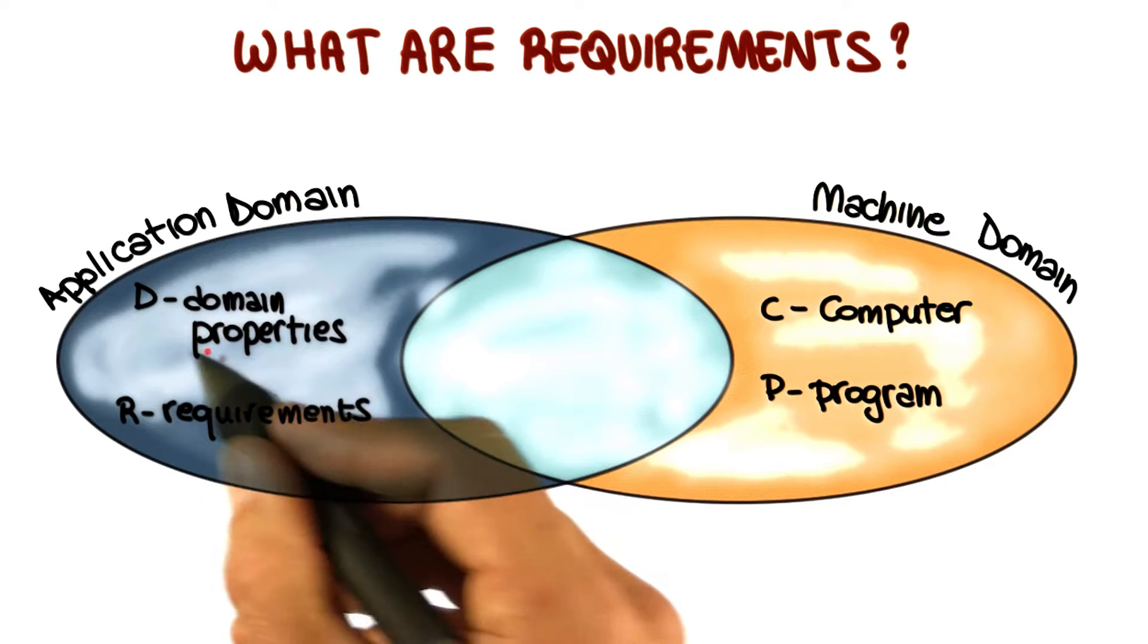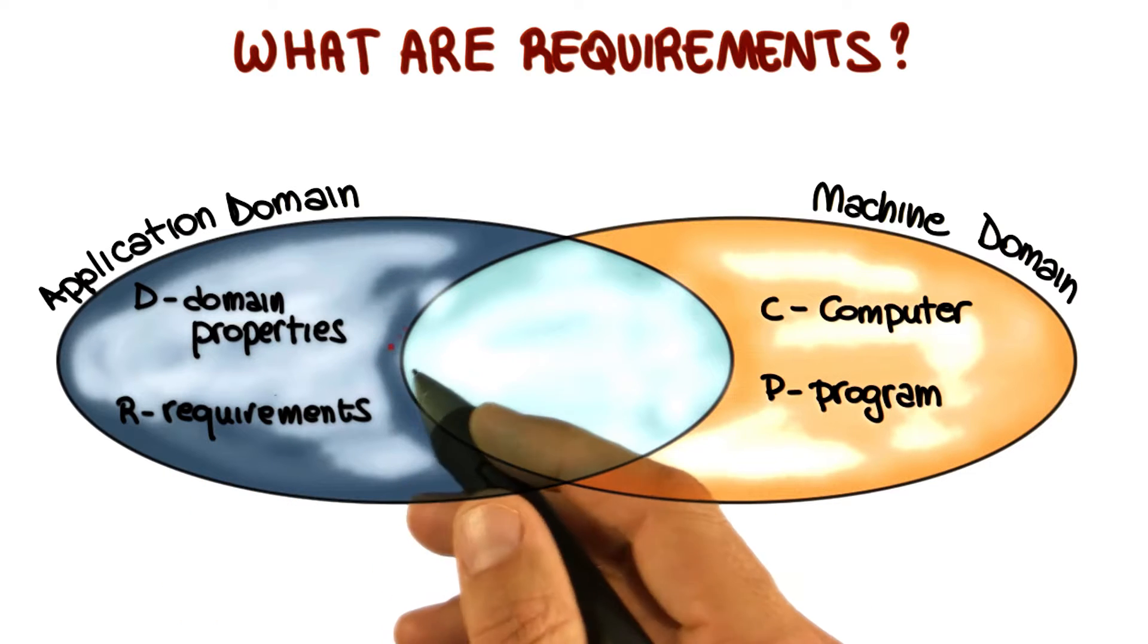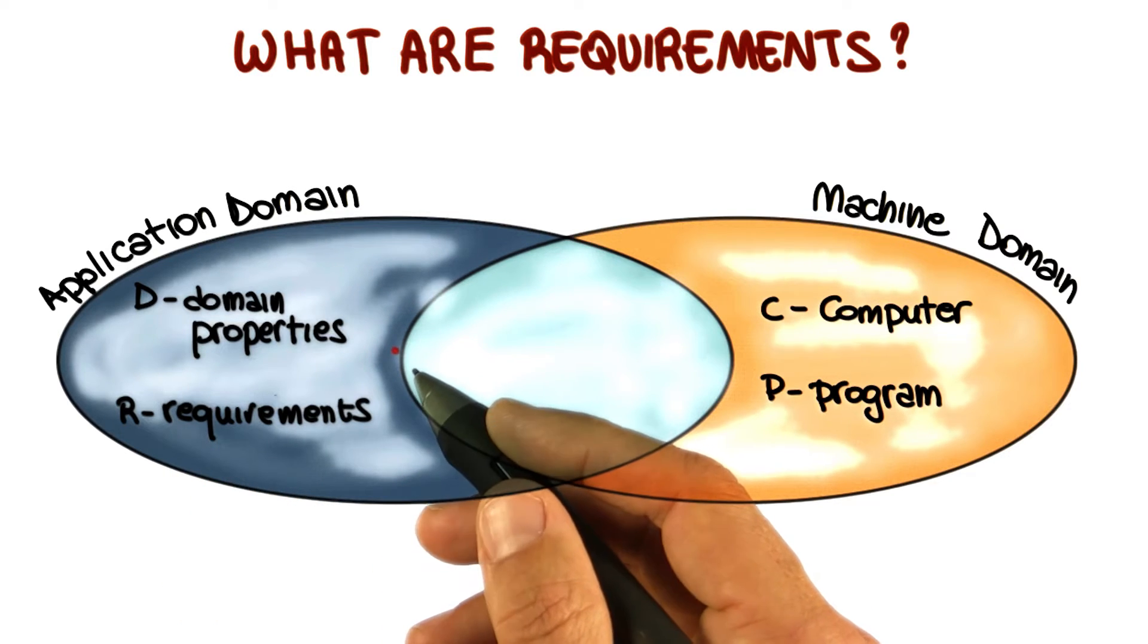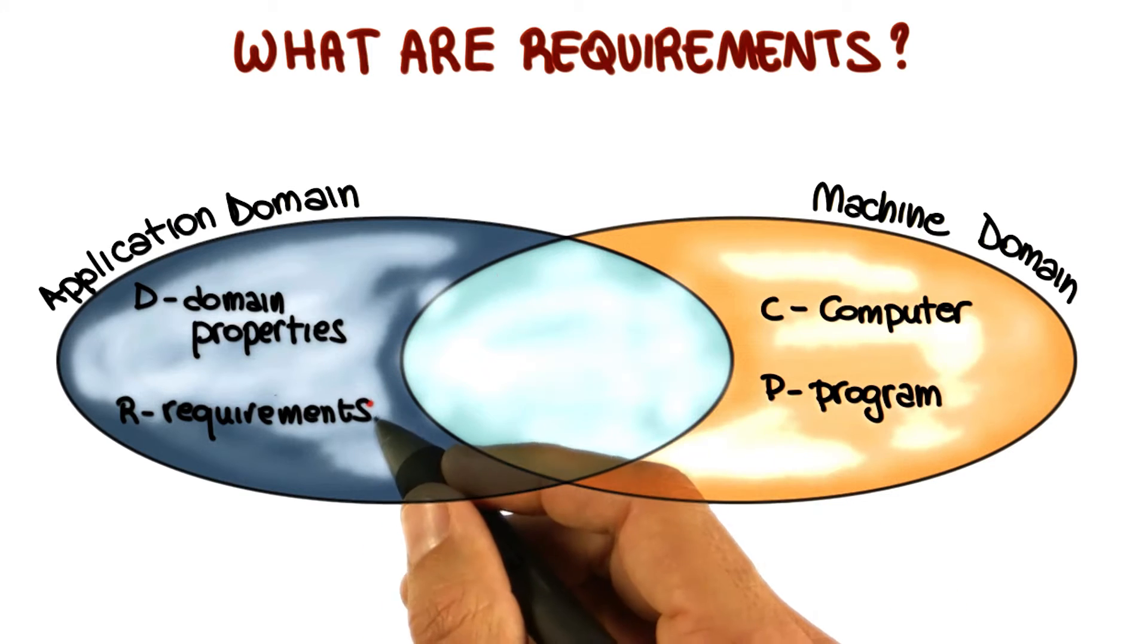The application domain, conversely, is characterized by domain properties, which are things that are true of the world anyways, whether I'm building my system or not.